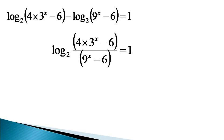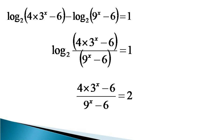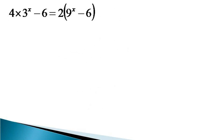From the definition of log, this expression can be written as 4 times 3 raised to the power x minus 6, divided by 9 raised to the power x minus 6, equals 2, since 2 raised to the power 1 equals 2. Cross multiplication then gives us 4 times 3 raised to the power x minus 6 equals 2 times 9 raised to the power x minus 6.